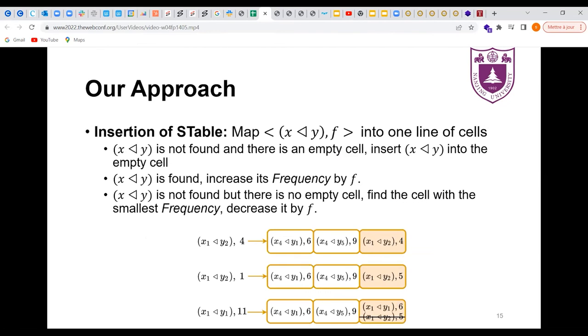The insertion of STable also has three cases. After mapping X, Y into one line of cells, if X, Y is not found and there is an empty cell, we insert it into the empty cell and set its frequency as f. If X, Y is found, we increase its frequency by f. If X, Y is not found and there is no empty cell, we find the cell with the smallest frequency and decrease it by f. After that, if its frequency is less than 0, we replace the cell with X, Y and set its frequency as its absolute value.